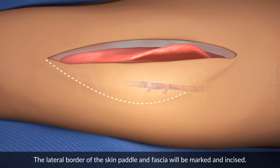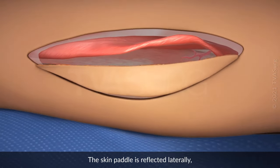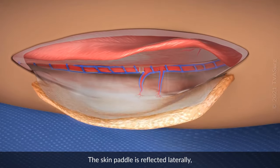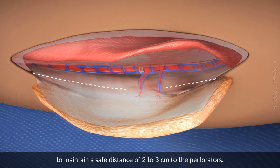The lateral border of the skin paddle and fascia will be marked and incised. The skin paddle is reflected laterally, and the fascia will be carefully transected on the proximal and distal border, to maintain a safe distance of 2 to 3 cm to the perforators.